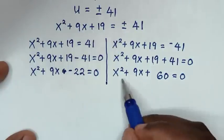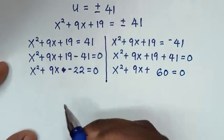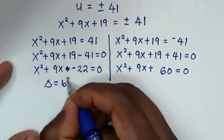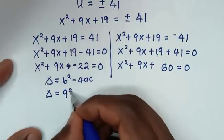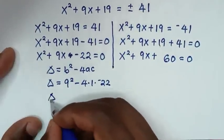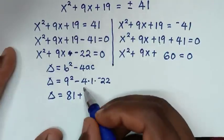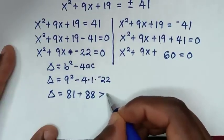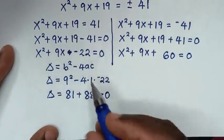Using the discriminant formula D = B²-4AC to check for real solutions. For x²+9x-22 = 0: A=1, B=9, C=-22. So D = 9² - 4(1)(-22) = 81 + 88 = 169, which is greater than 0, so this equation gives a real solution and we continue to solve it.